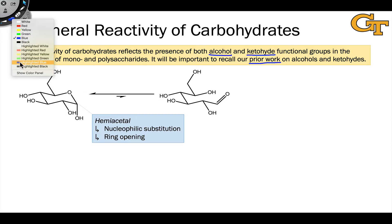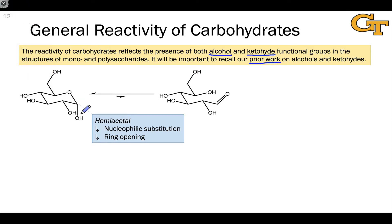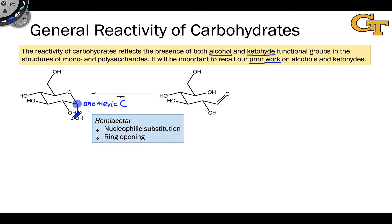The anomeric carbon — the carbon linked to two oxygen atoms in a monosaccharide or even in a polysaccharide — is part of a hemiacetal. Hemiacetals are subject to ring opening, which involves elimination of the hydroxyl group. Hemiacetals are also subject to nucleophilic substitution, keeping in mind that this hydroxyl group has the potential to act as a nucleofuge or leaving group, especially upon protonation.